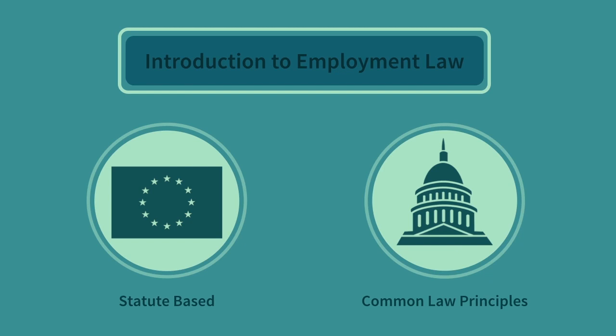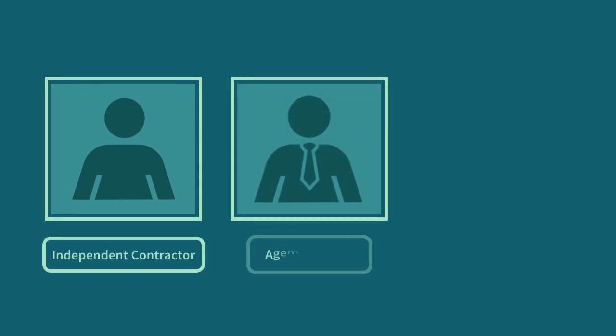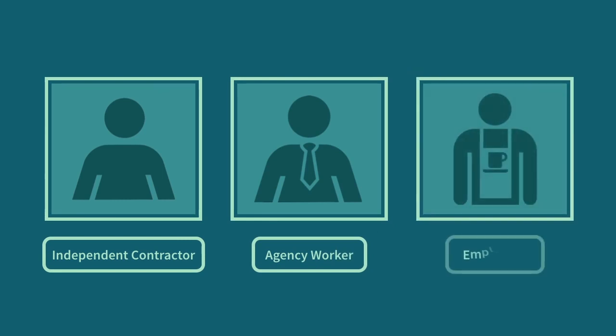There are three main categories of worker in the UK: the self-employed, also referred to as an independent contractor, agency workers, and employees. Each category enjoys different employment protection rights. We will now examine each category in turn.